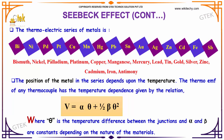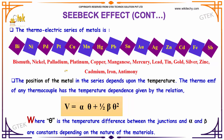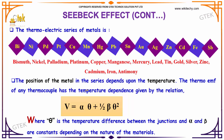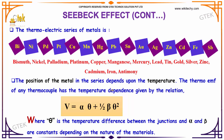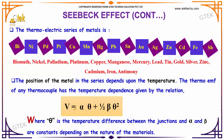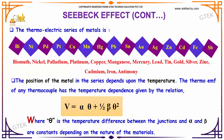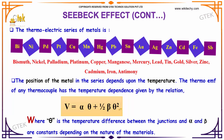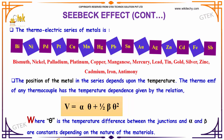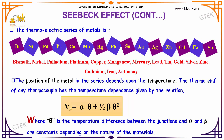The position of a metal in the series depends upon the temperature. The thermo-EMF of any thermocouple has a temperature dependence given by the relation: V = α·θ + ½·β·θ², where θ is the temperature difference between the junctions, and α and β are constants that depend on the nature of the materials.